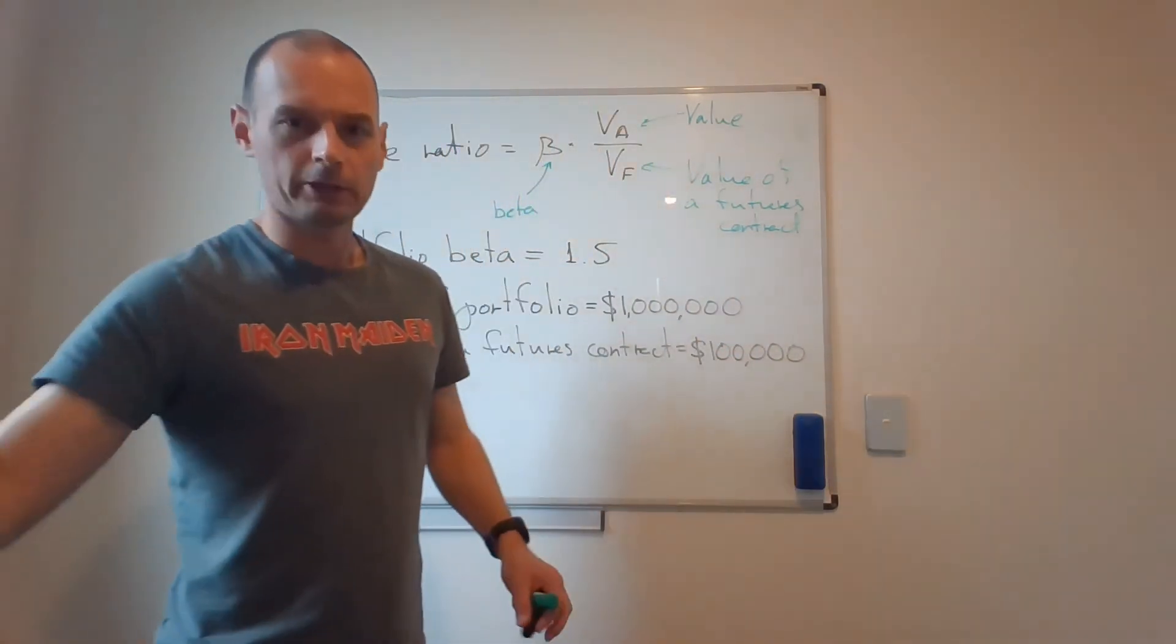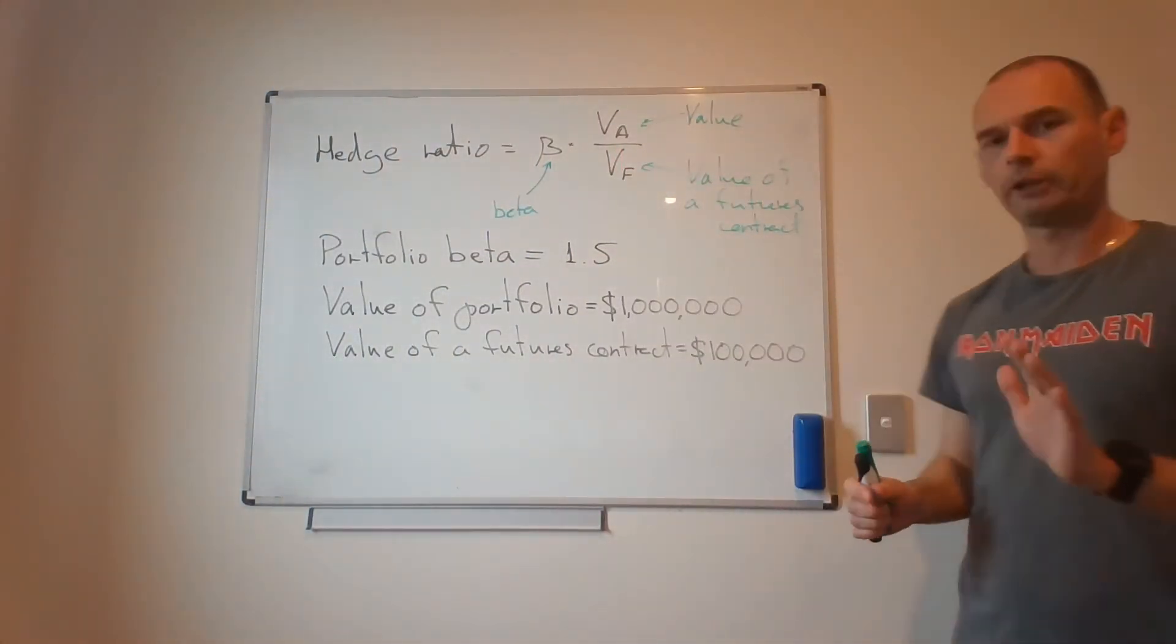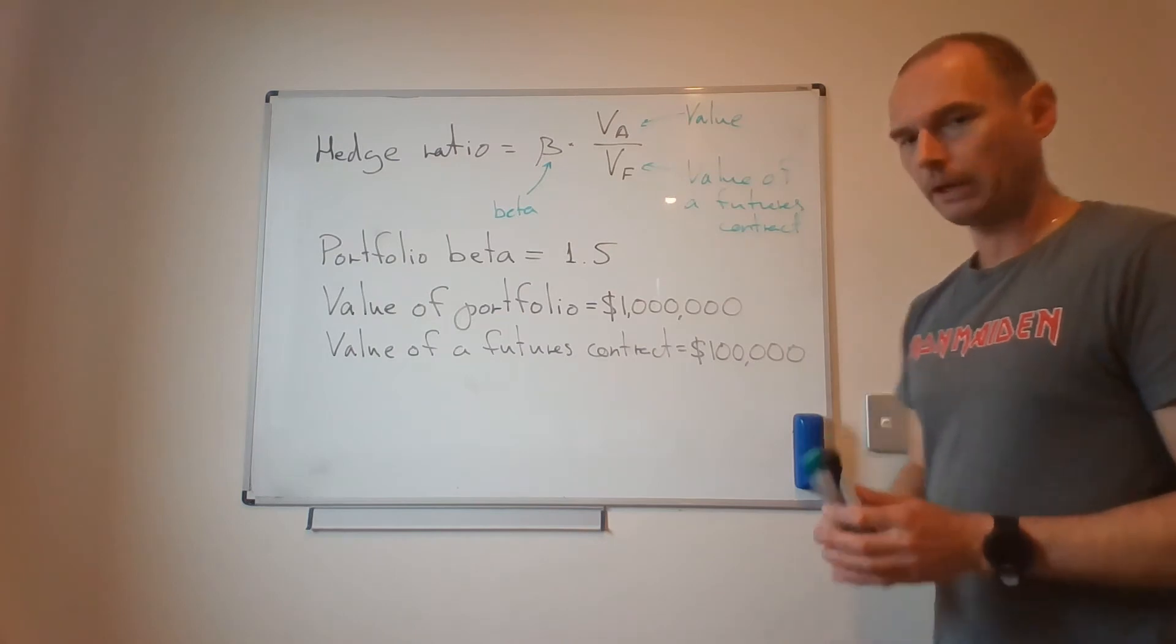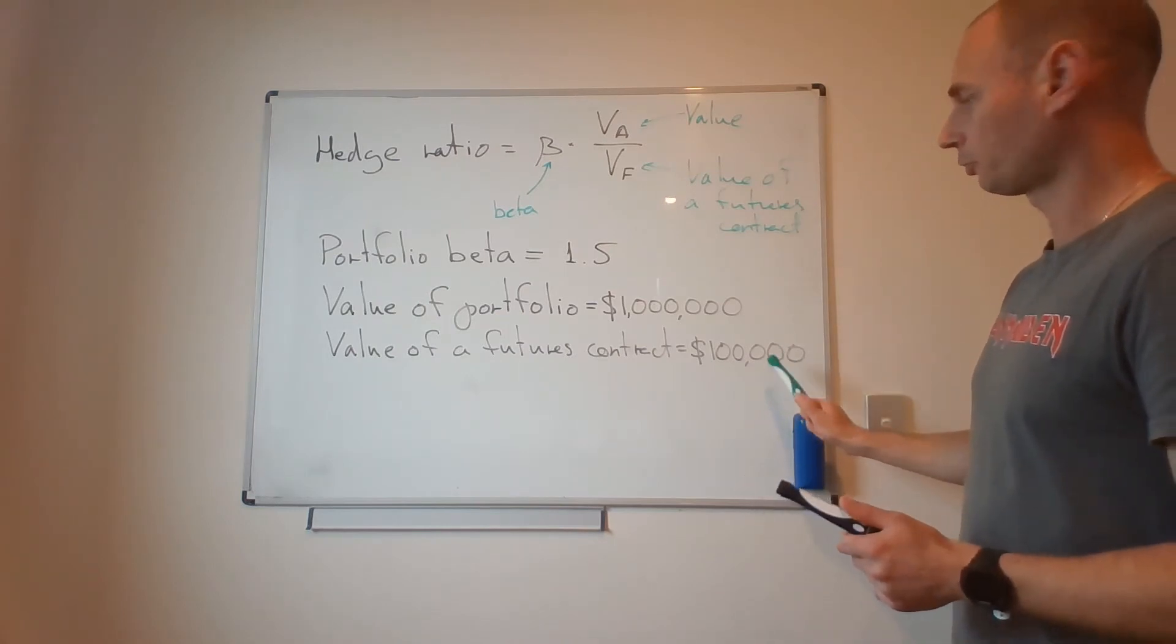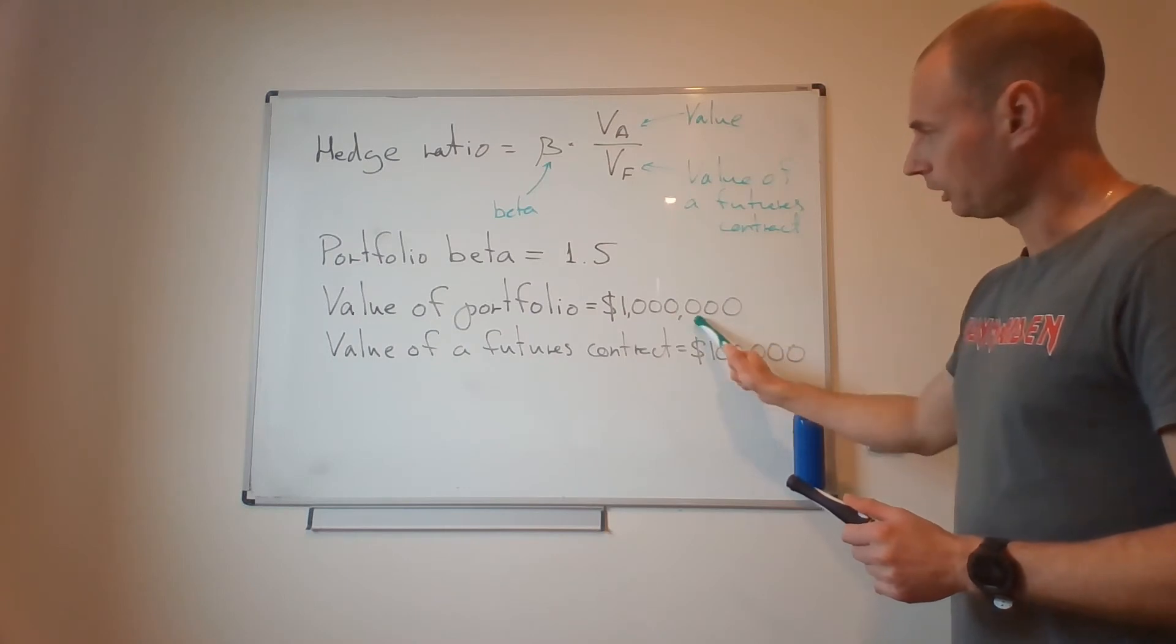The textbook makes it a little bit more complicated than that, but I have chosen very easy numbers. So basically, how many of these contracts do I need to sell in order to eliminate risk of a $1 million portfolio?